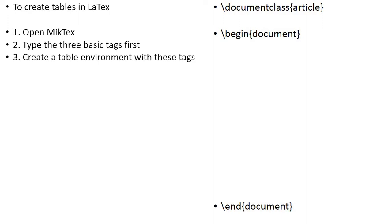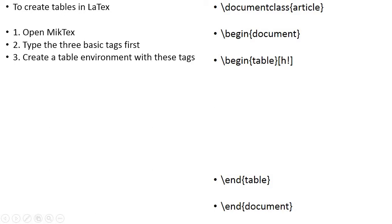Now the actual thing begins — that is to create an environment for the table. For creating the table environment you need two more tags, just like \begin{document} and \end{document}. These tags are \begin{table} and \end{table}. The h and exclamation mark are optional, and I will tell you about their importance later. The required tags are \begin{table} and \end{table}.